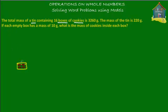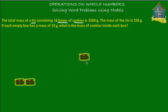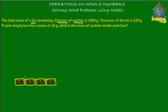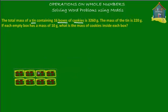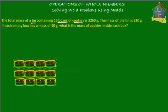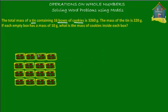We know that there are 16 boxes in one tin, so let's make 16 boxes. Let's put 1, 2, 3, 4 here. So let's copy all these — 4 and 4 makes 8, and 4 more makes 12, and 4 more makes 16.